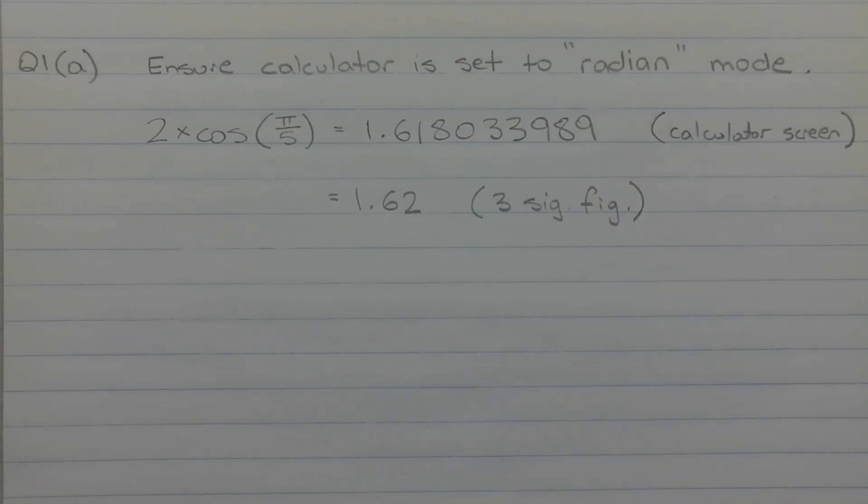So for 3 significant figures, I'm going to identify the first 3 significant figures, which is 1, the 6, and the 1. So this is the 3rd significant figure. Now this 1 will need to be rounded up to a 2, because the number next to the 1, which is the 8, is a value that's 5 or more.